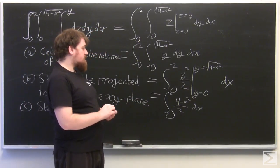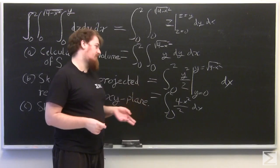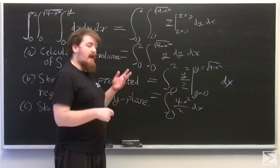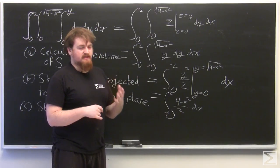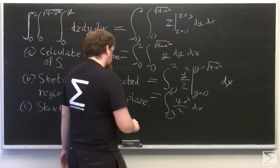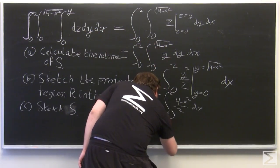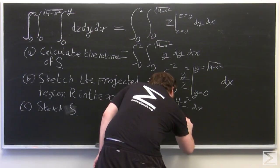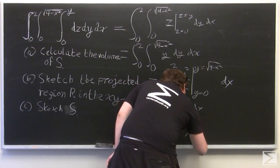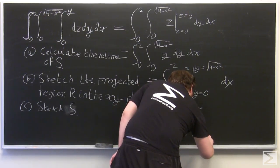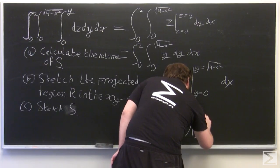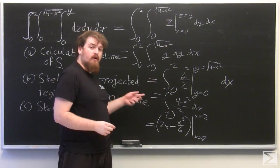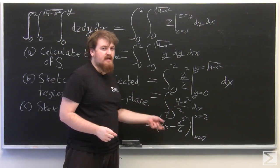Now, we use linearity of integration. 4 over 2 integrated dx becomes 2 times x. And x squared over 2 integrated dx becomes x cubed over 6. At x equals 0, this will equal 0. At x equals 2, this will equal 4 minus 8 over 6.